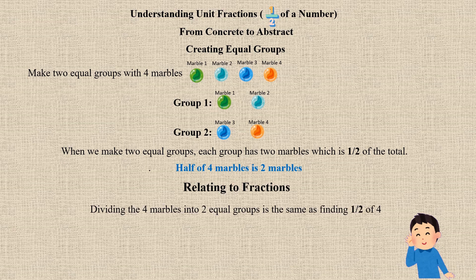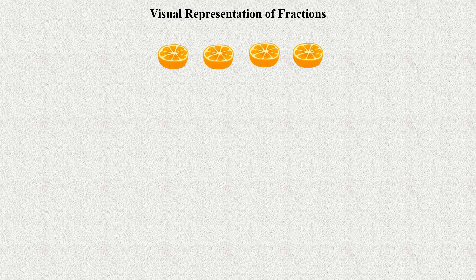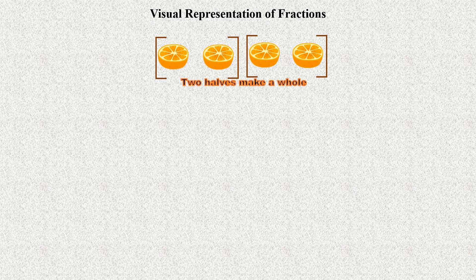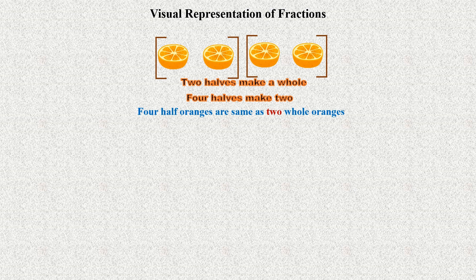Dividing the 4 marbles into 2 equal groups is the same as finding half of 4. Mathematically, half of 4 is 2. Now take another example: 4 half oranges — make 2 groups of these 4 half oranges. Count how many are in each group. 2 halves make a whole, and 4 halves make 2 whole oranges. So mathematically, half of 4 is 2.